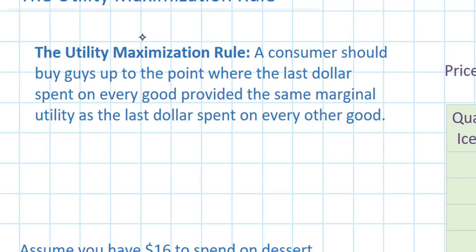What this is basically saying is that you always want to get the most utility per dollar spent on a good, such that the last dollar spent on every good provides the same amount of additional utility as the last dollar spent on every other good.